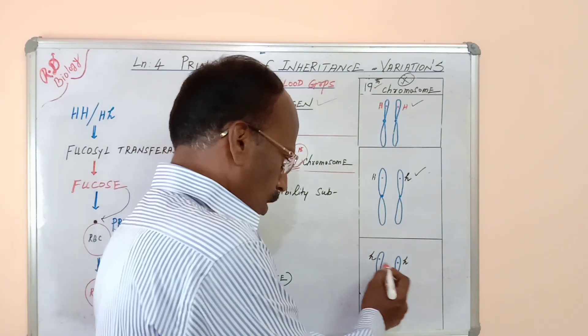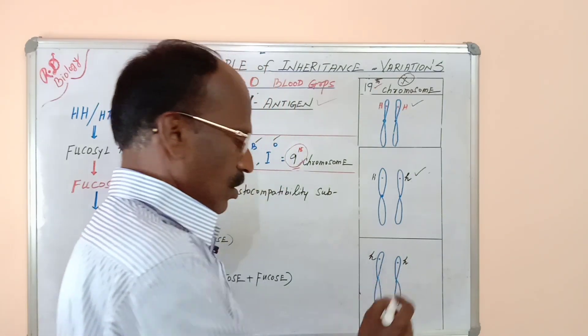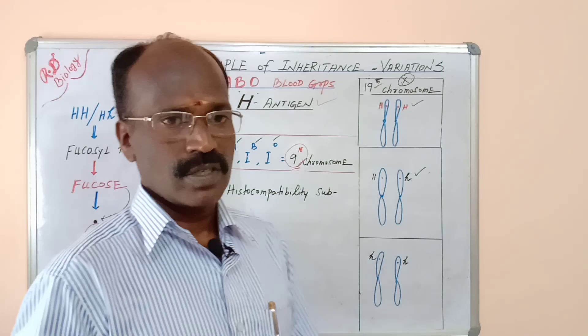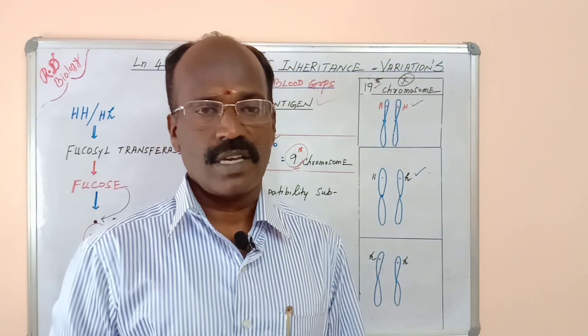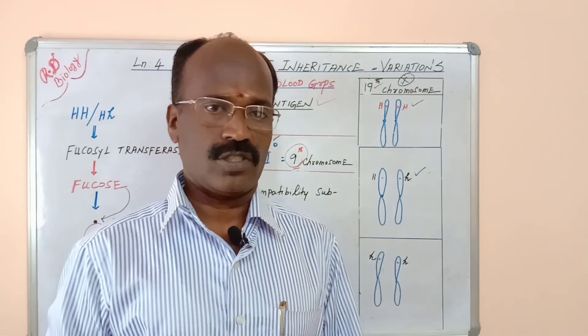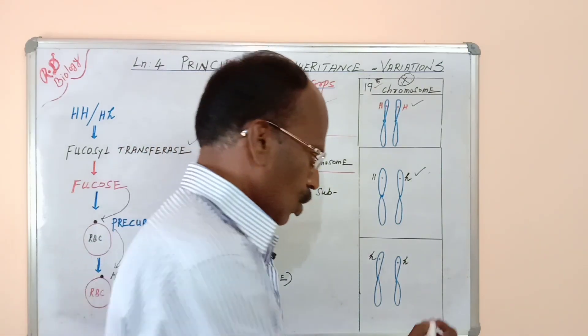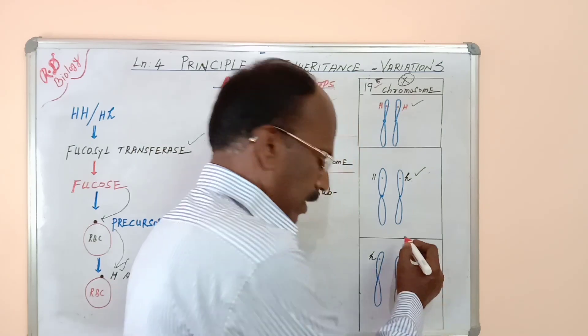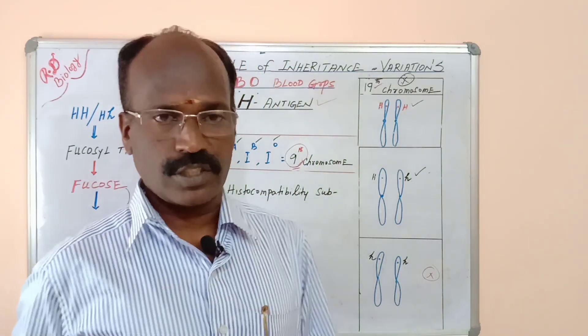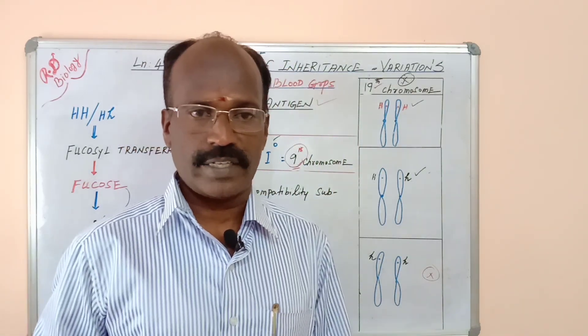Both homozygous dominant and heterozygous dominant genotypes encode the synthesis of antigen H. Whereas the third type — homozygous recessive — cannot synthesize antigen H. This case will be seen in the next video, which is an interesting factor.